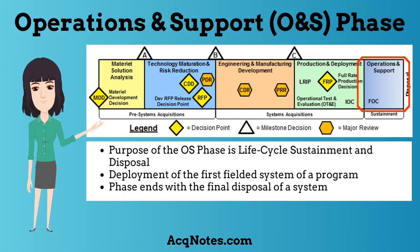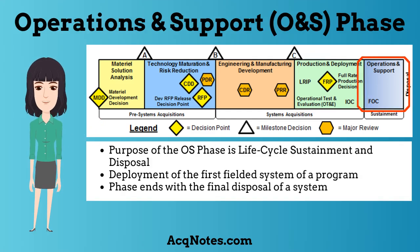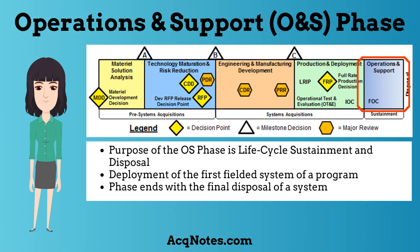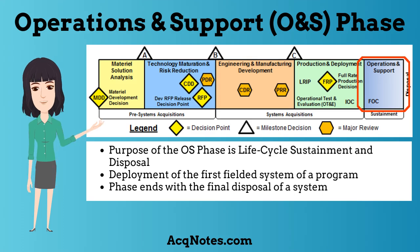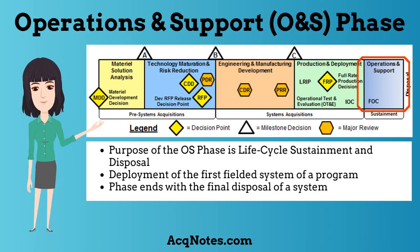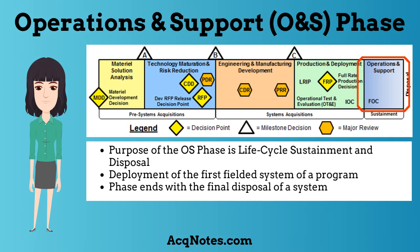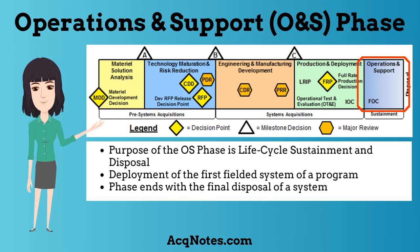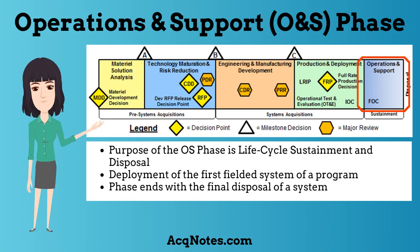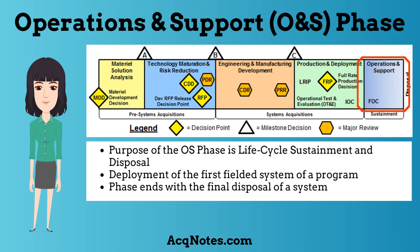The final phase is the operations and support phase. The purpose of this phase is life cycle sustainment and disposal. This phase is initiated by the deployment of the first fielded system of a program. The life cycle sustainment efforts overlap the full-rate production efforts of the production and deployment phase. The phase ends with the final disposal of a system.